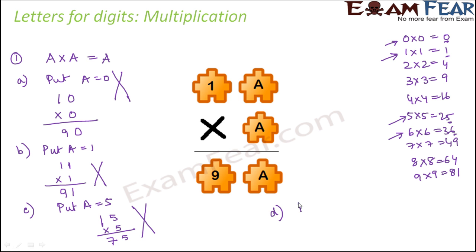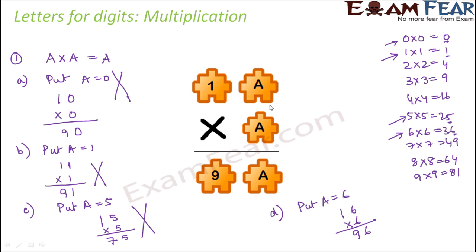We are left with the last option: a=6. In that case it would be 16×6. 6×6=36, carry 3; 6×1+3=9. So in this case it satisfies the condition where the result is 96 and a equals the same digit. Therefore the answer is a=6.